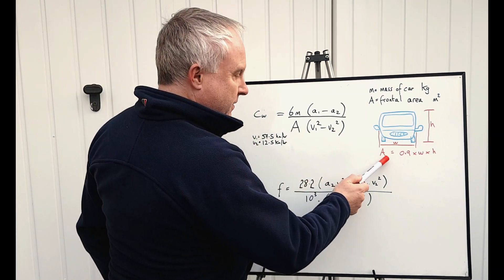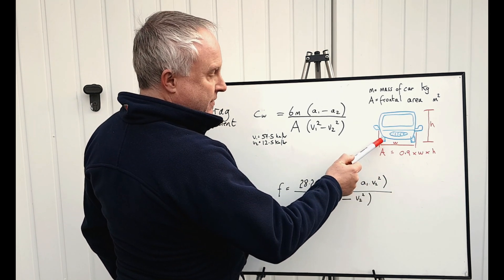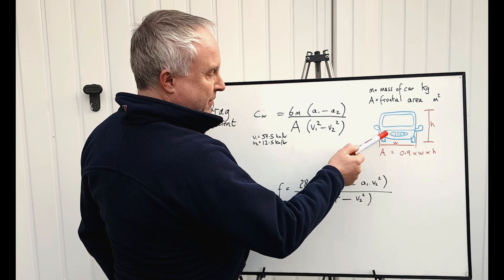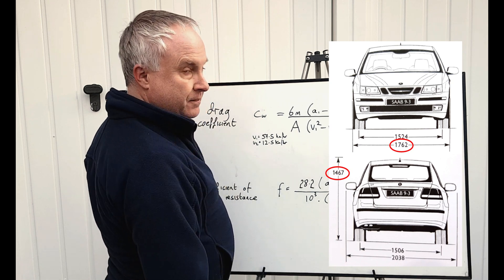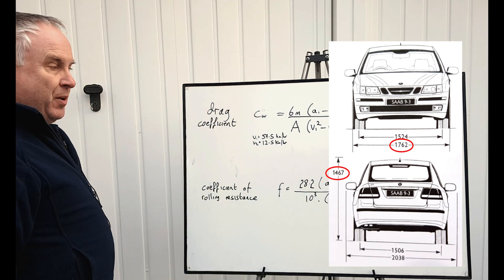Frontal area can be calculated using 0.9 times the width of the car without mirrors, times the height of the car. That will give you a very good close approximation.